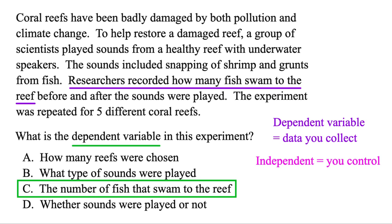Now the independent — that's the one that you control. And in this experiment, it's whether you play sound or not. So the last one, that's our independent variable — whether sounds were played.